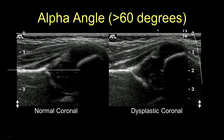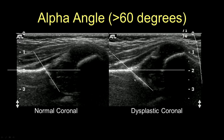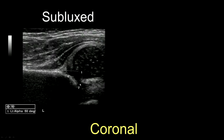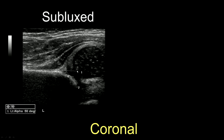The alpha angle should be about 60 degrees in the normal coronal plane. Here we have a dysplastic angle which is much more acute. Notice also that this acetabular rim is less well-defined. This is a subluxed case where the alpha angle is very acute. You can see that the femoral head is not bisected by the line through the iliac wing — the femoral head is partially out, and the acetabular rim is poorly defined, which is a very good indication of hip dysplasia.